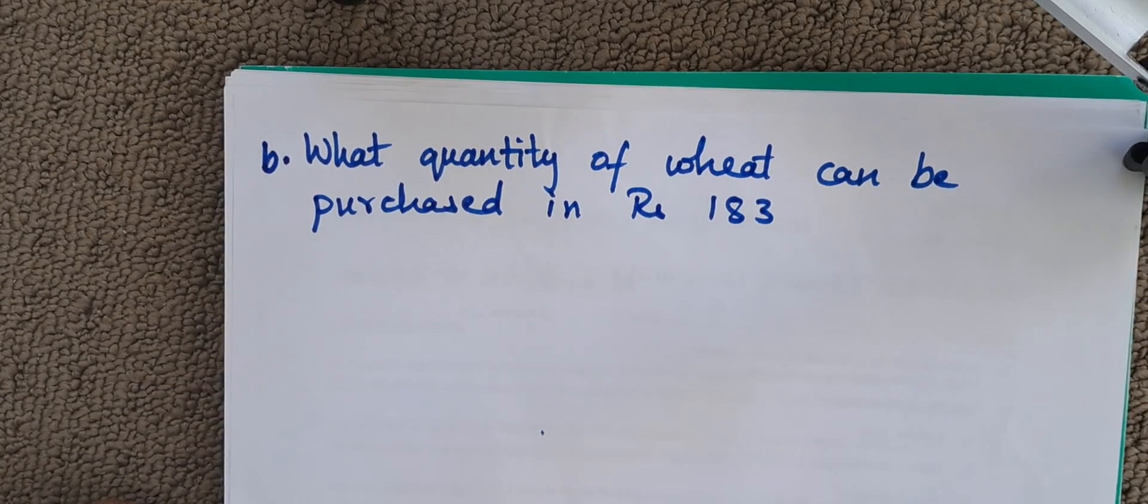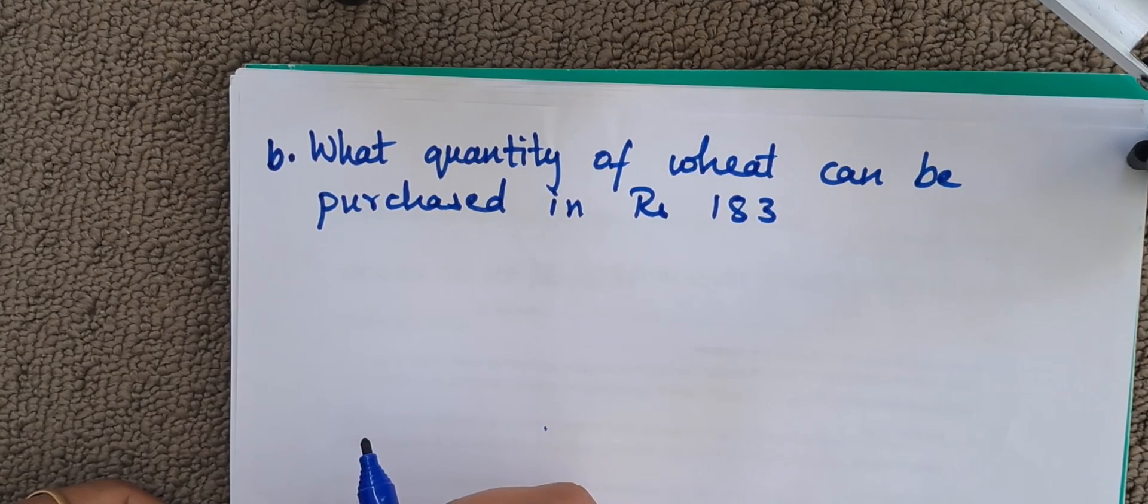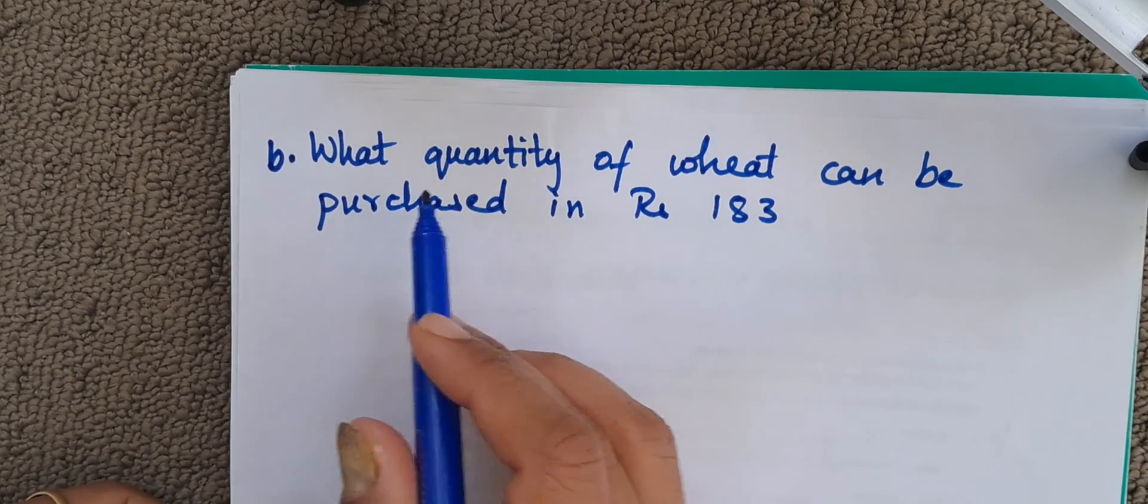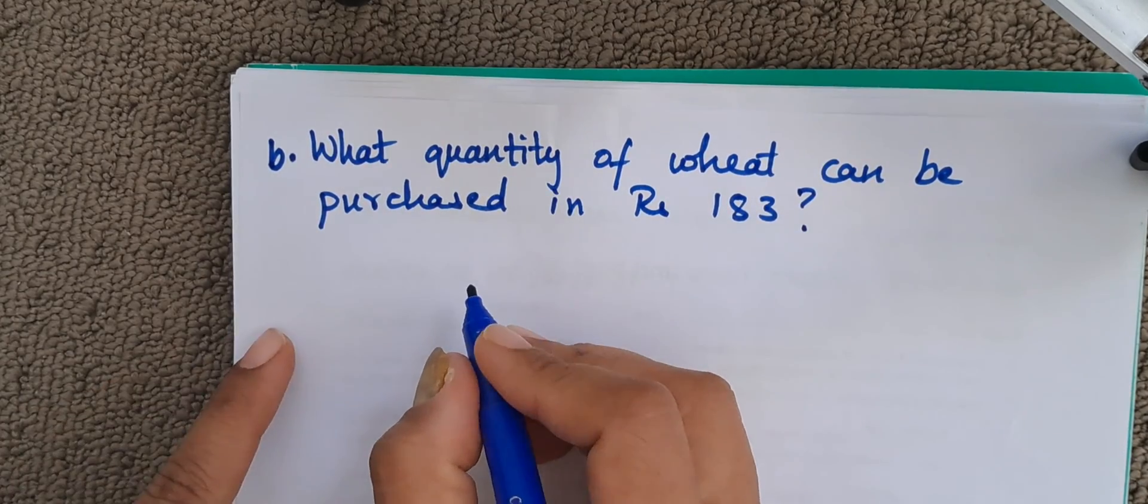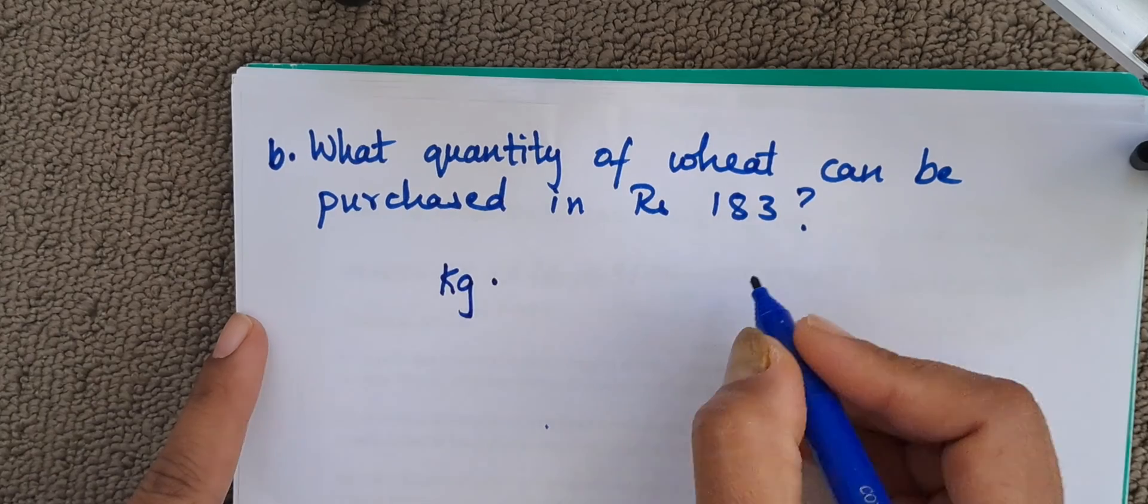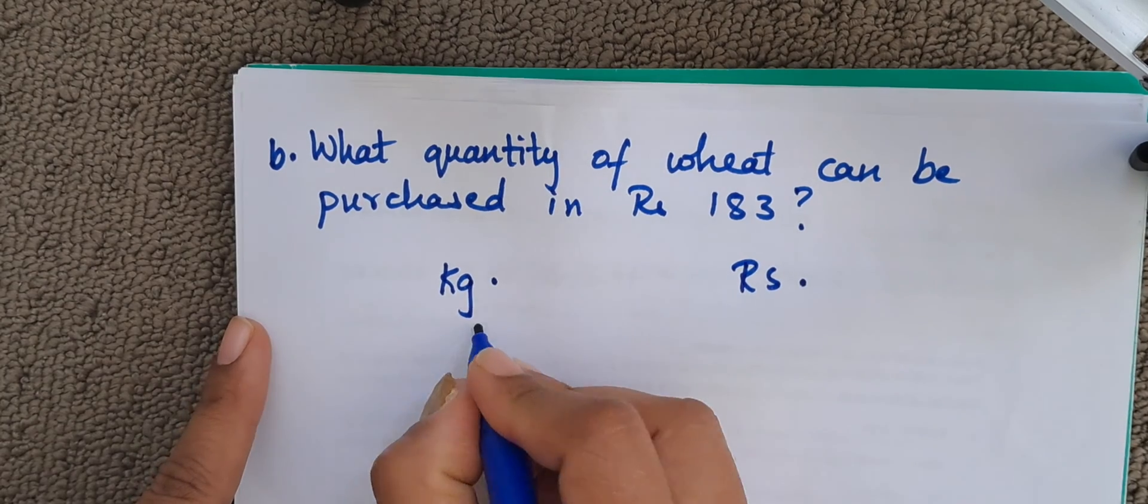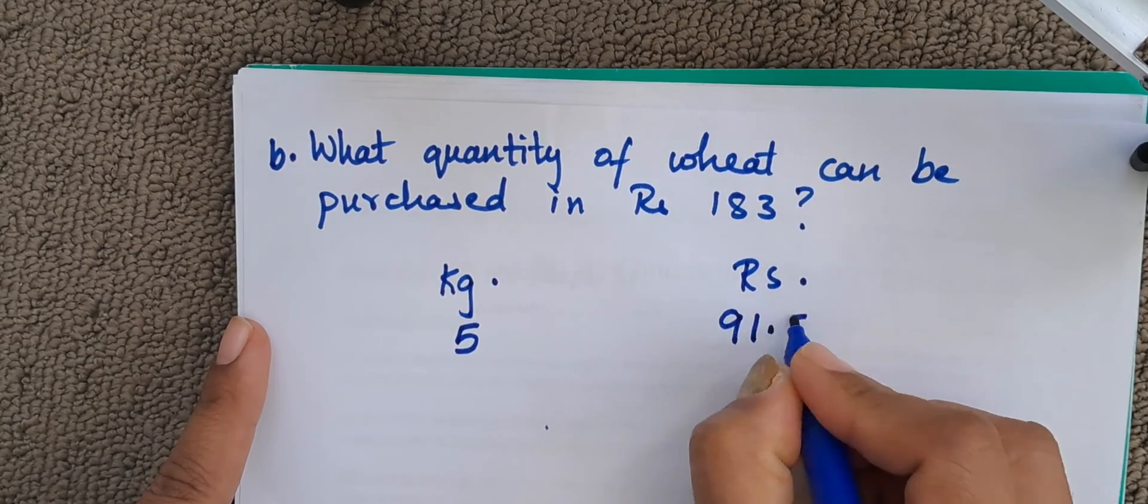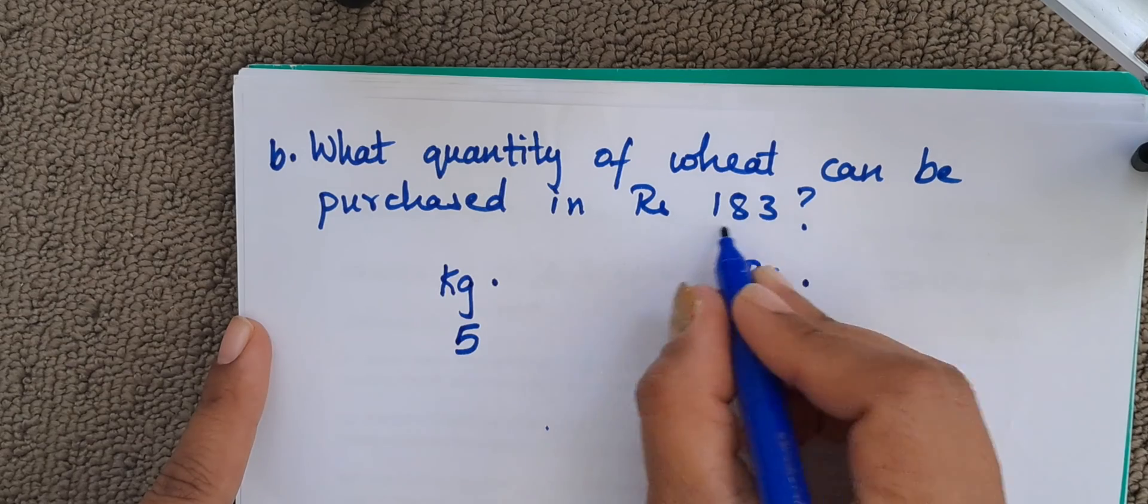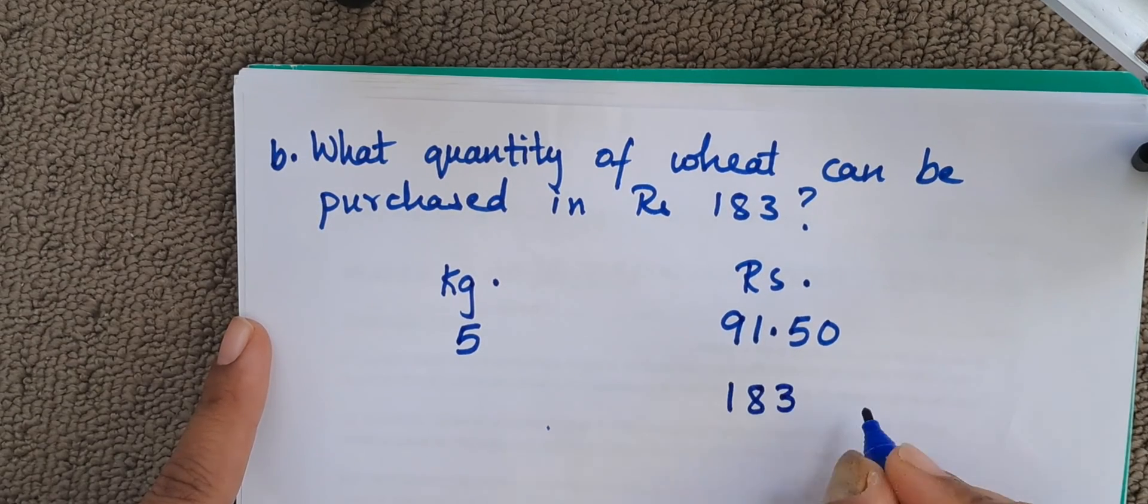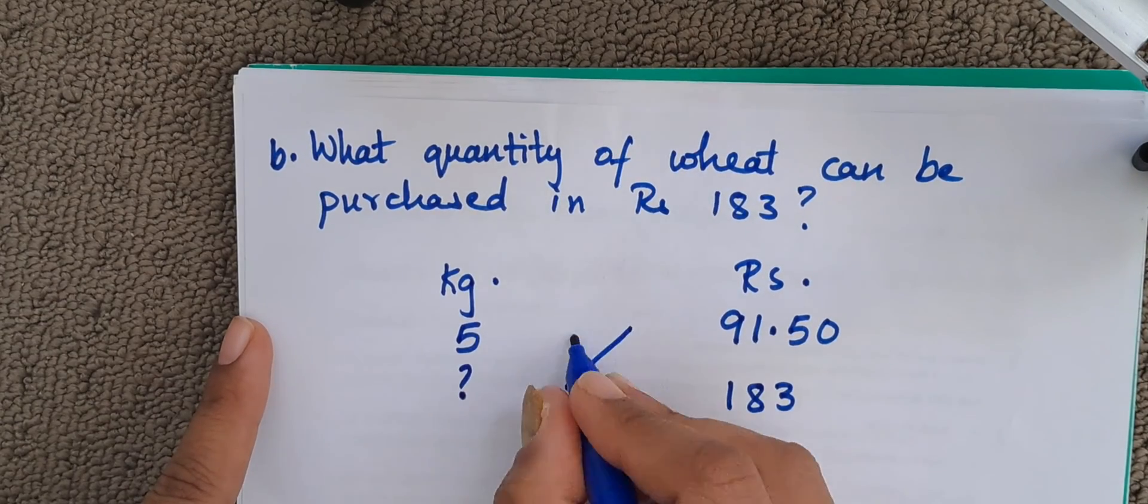Now let us see the B part of the same question. They have told us cost of 5 kg of wheat is 91.5. What quantity of wheat can be purchased in rupees 183? So we do the same thing. Kg and rupees. They have told us 5 kg of wheat is costing us 91.50. Now they have given us money here, that is rupees. They have told us 183 rupees. If we give 183 rupees, how many kgs of wheat can be purchased?